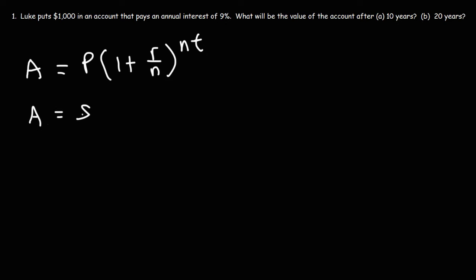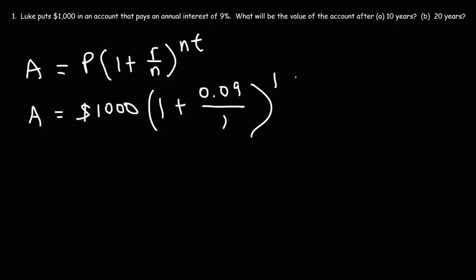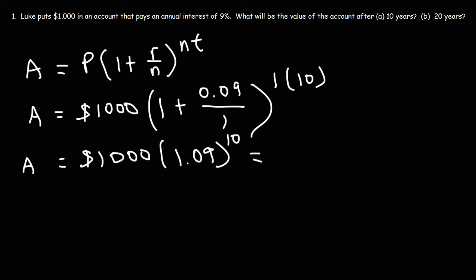In this problem, the amount invested is $1,000. The interest rate is 9%, which as a decimal is 0.09 — take 9 divided by 100. Since the account pays annual interest with nothing to indicate monthly or weekly compounding, N is 1. We want the value after 10 years, so A equals 1,000 times 1 plus 0.09, or 1.09, raised to the 10th power. That gives us $2,367.36.